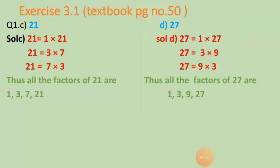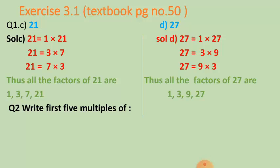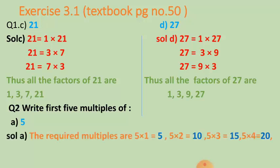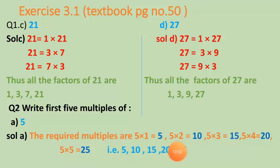In the same manner you can find factors for other numbers too. Now for the next question: we need to write the first five multiples of five. We multiply five by counting numbers starting from one to five. So the first five multiples of five are five, ten, fifteen, twenty, and twenty-five.